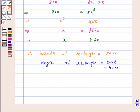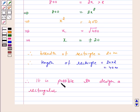Now we have the breadth of the rectangle as 20 meters and the length as 40 meters. Therefore, it is possible to design a rectangular mango groove.